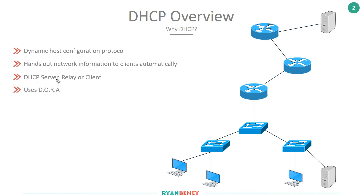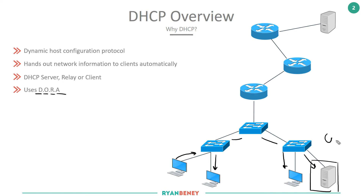DHCP uses DORA: Discover, Offer, Request, Acknowledge. The Discover is sent from the client as soon as it connects to the network. This is a broadcast packet sent to everyone inside the broadcast domain — everyone will receive it on their NIC and process it accordingly. However, only the server listening on the UDP port will continue to process it and send a response. Everyone else, once they decapsulate it and find no application listening on those DHCP ports, will drop it.